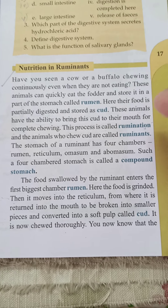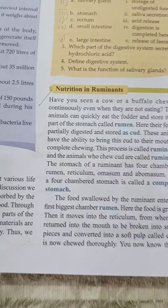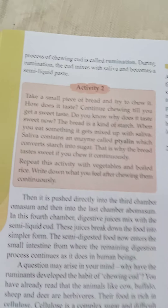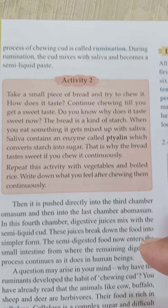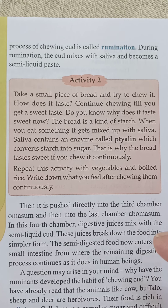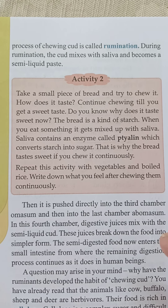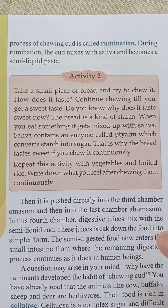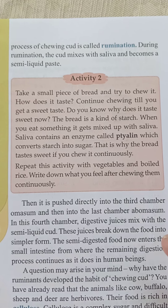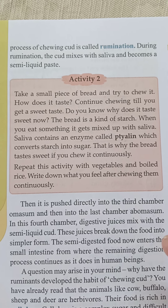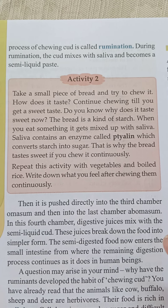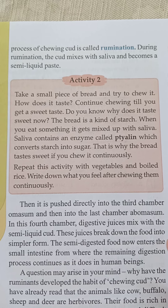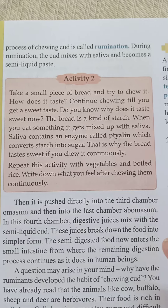یہاں غزا بہت اچھی طرح چبائی جاتی ہے۔ The process of chewing cud is called rumination — جیسا کہ آپ جانتے ہیں کہ اس process کو جس میں cud کو اچھی طرح چبایا جاتا ہے، rumination کہلاتا ہے۔ During rumination, the cud mixes with saliva and becomes a semi-liquid paste — جانوروں میں بھی منہ کے اندر saliva موجود ہوتا ہے، تو جب cud اچھی طرح چبایا جاتا ہے تو وہ saliva میں mix ہو کر ایک semi-liquid paste بن جاتا ہے۔